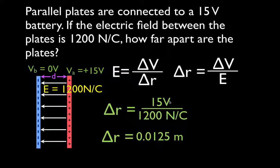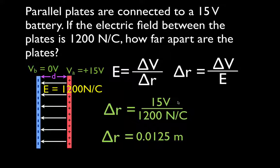Remember, a volt is a joule per coulomb, and that is also newton meters per coulomb. So the newton cancels with the newton from newtons per coulomb, and the coulomb cancels with the coulomb from joules per coulomb, and you're just left with meters. If you divide volts by newtons per coulomb, you're left with meters.